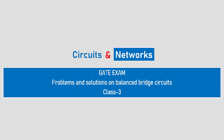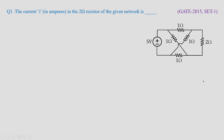Welcome to a new session of circuits and networks. In today's class under GATE exam preparation, we'll see problems and solutions on balanced bridge circuits. In different GATE exams there are some common concepts where questions are asked frequently — the question frame is different but the concept is the same. For example, in GATE 2015 Set 1, current was asked to be obtained in a 2 ohm resistor for this kind of complex network circuit.